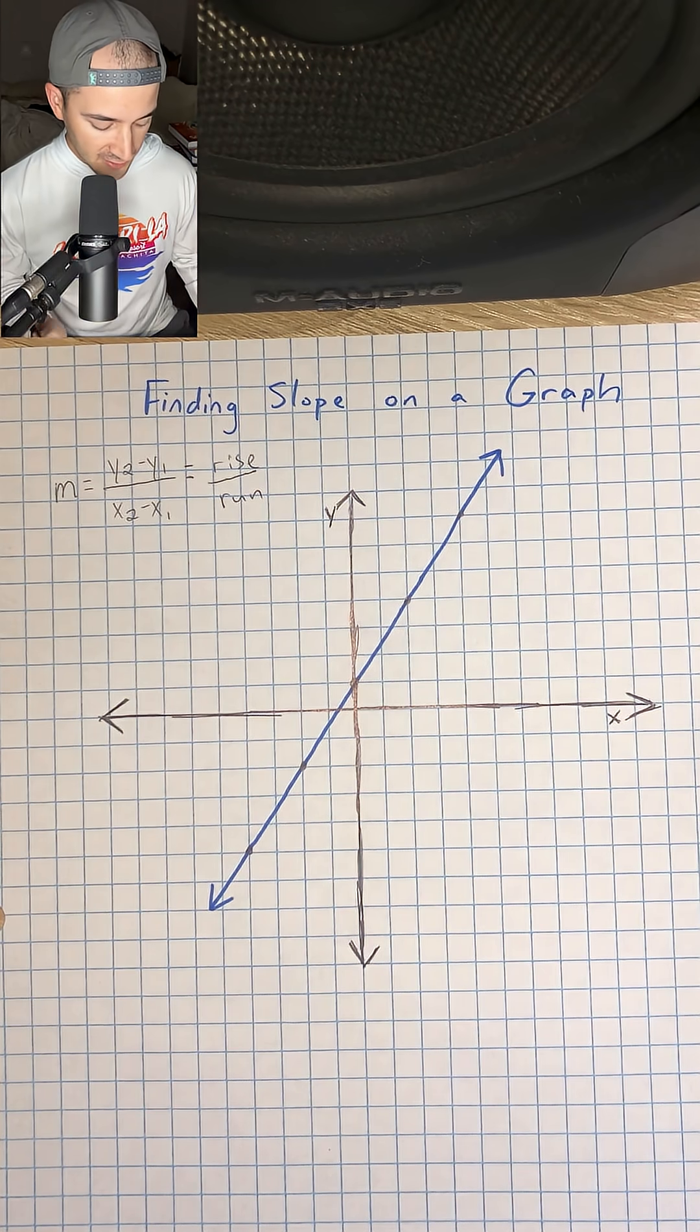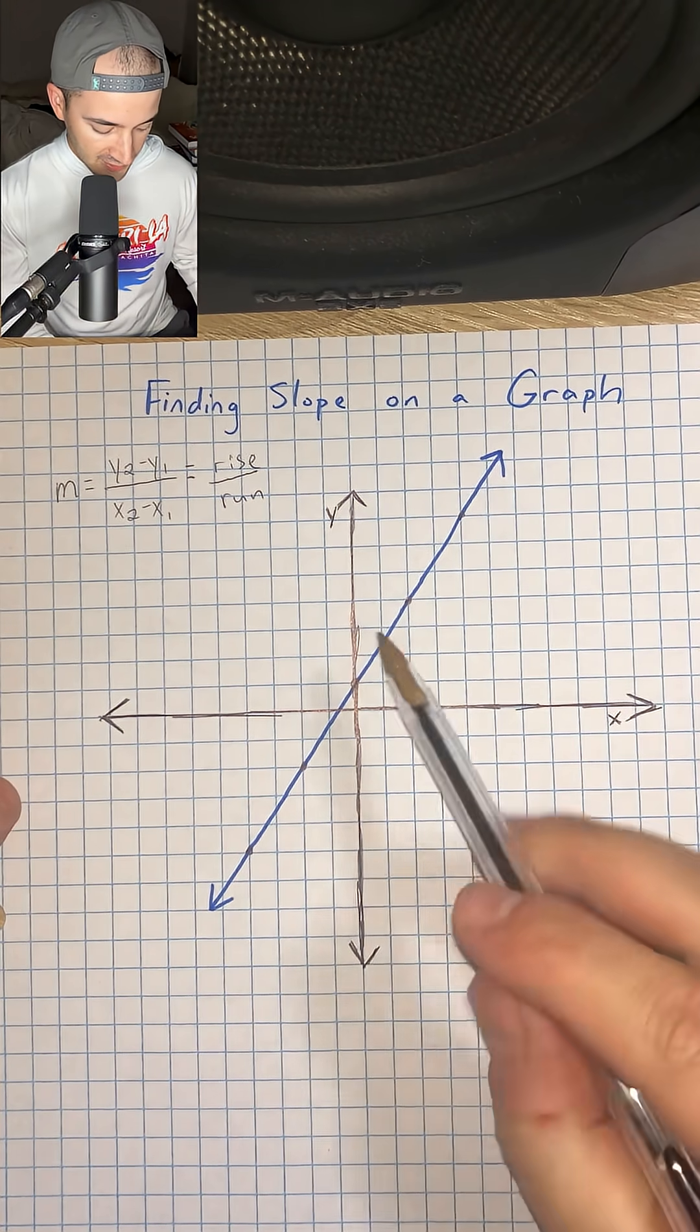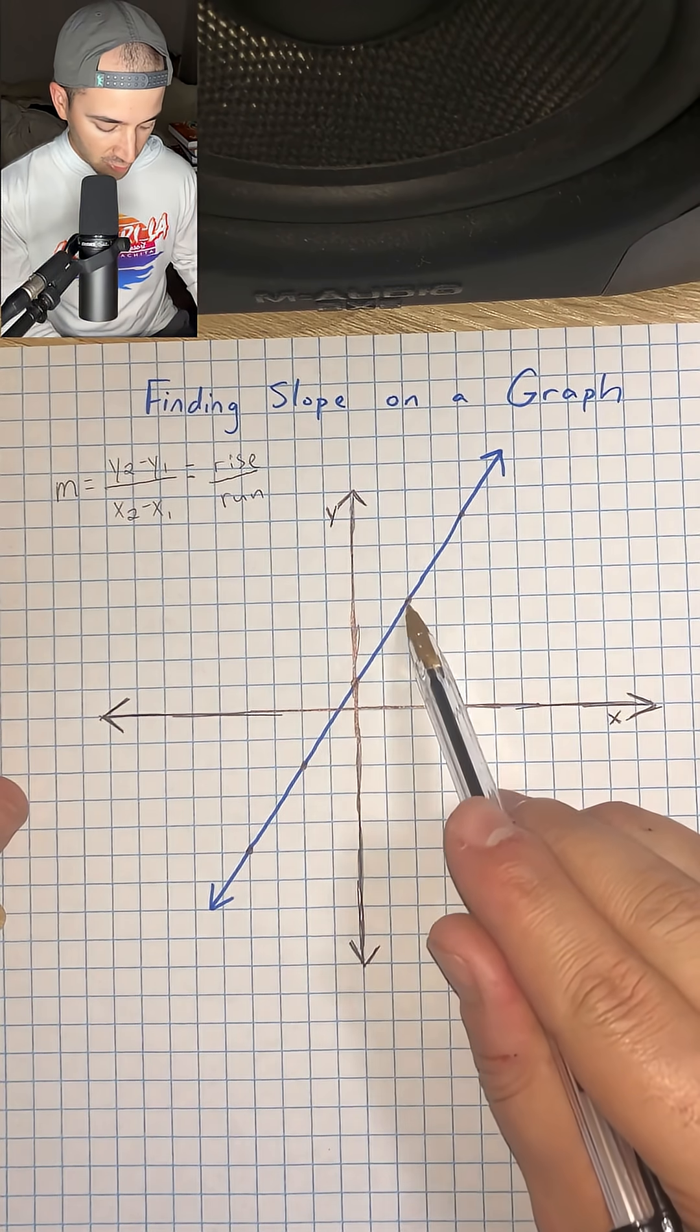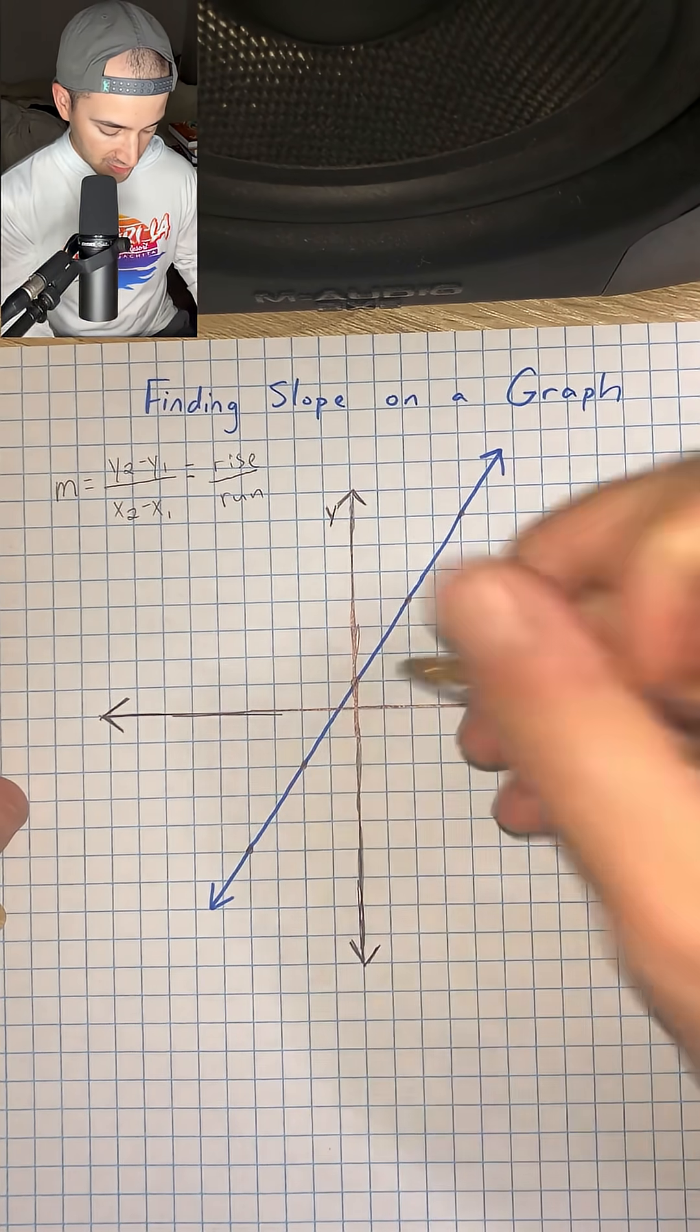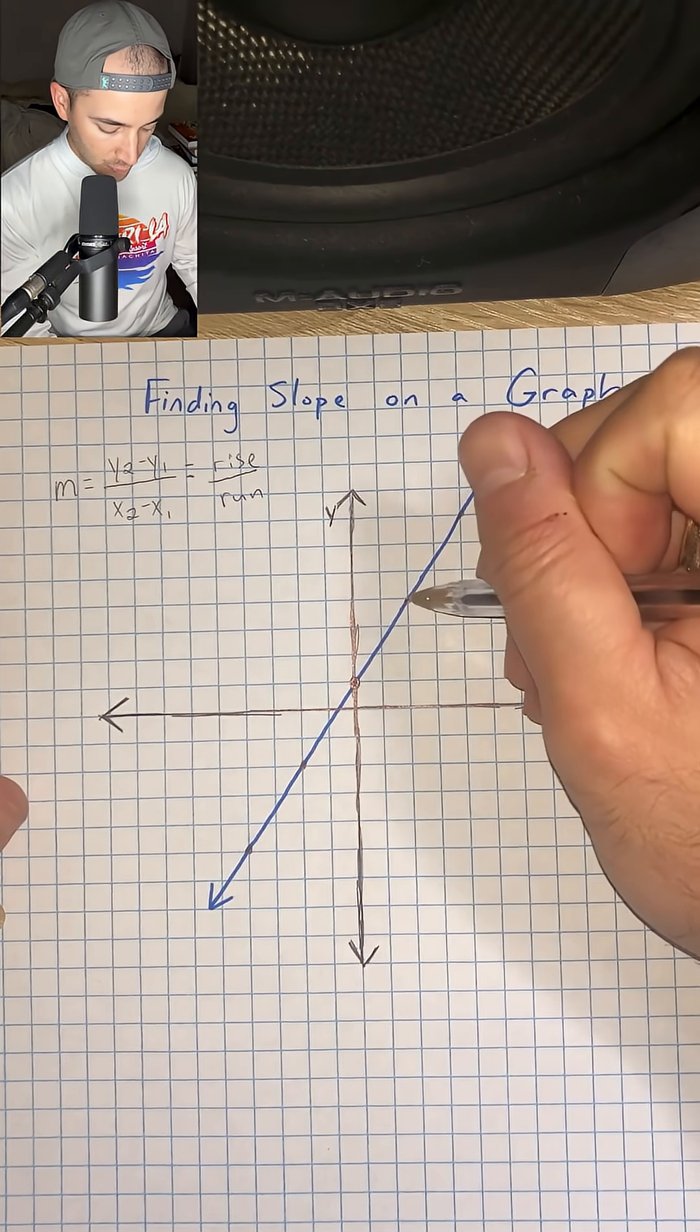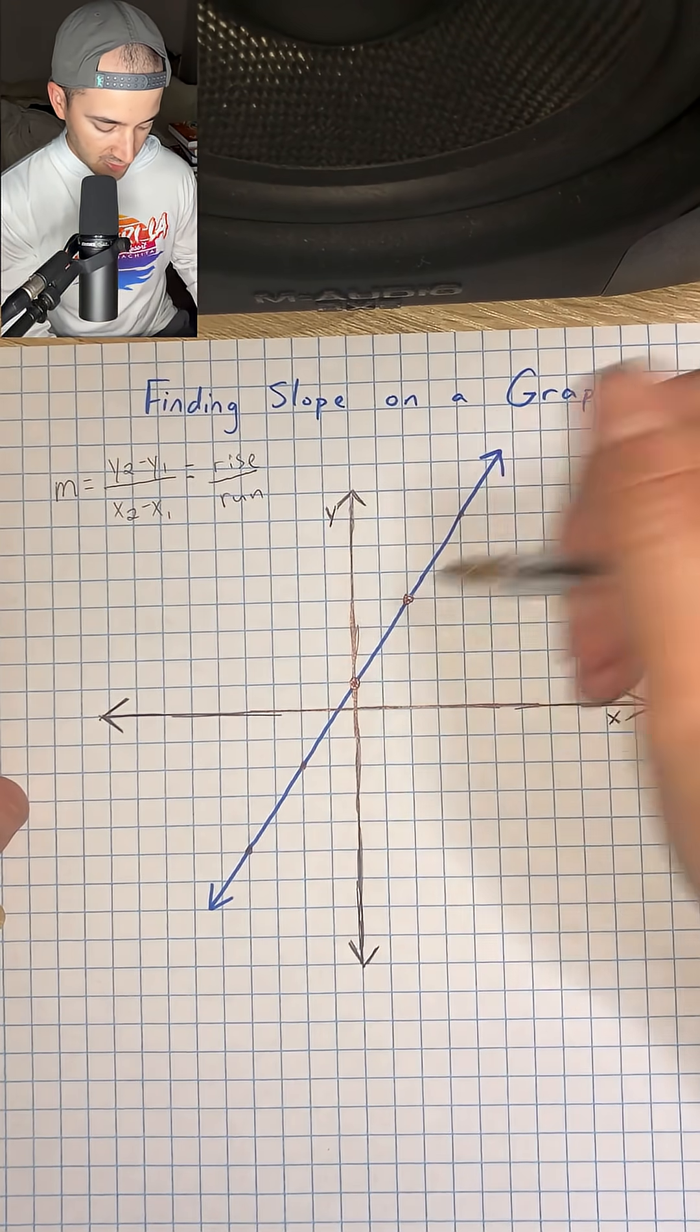So the way that I like to find slope on a graph is I'm going to pick two points where they're exactly on the corner of one of these squares. So let's just start right here, and my second point is going to be right there.